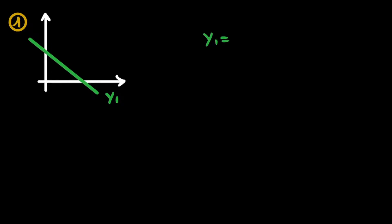In the first exercise we have the following two curves. The first one, y1, has the equation y1 = minus x plus 2. The second linear curve has a steep positive slope, we call it y2, and its equation is y2 = 2 times x. We are asked to find the intersection point of these two functions — its x coordinate and y coordinate.